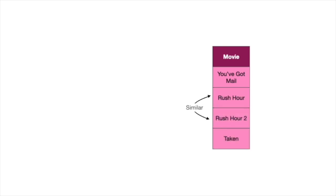Let's look at a small example with four sentences using movie titles. The movies are You've Got Mail, Rush Hour, Rush Hour 2, and Taken. The two Rush Hours are similar movies, and You've Got Mail and Taken are different movies, so we need a notion to capture this.